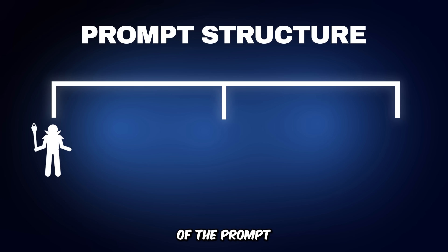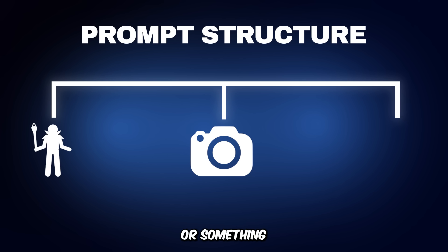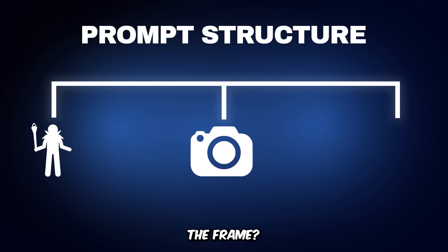The second part of the prompt is all about the camera. Describe the camera angle — whether it's a close-up, wide shot, or something else — and mention any camera movement if you want one. For example, is it a smooth tracking shot, a handheld selfie-style shot, or a static camera just holding the frame? Be as specific as you can.